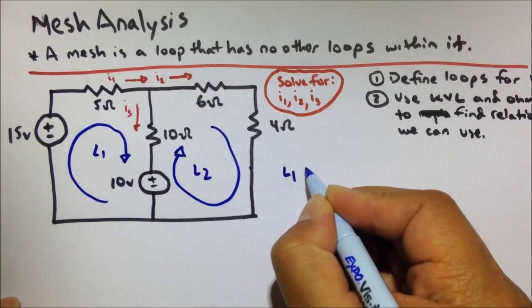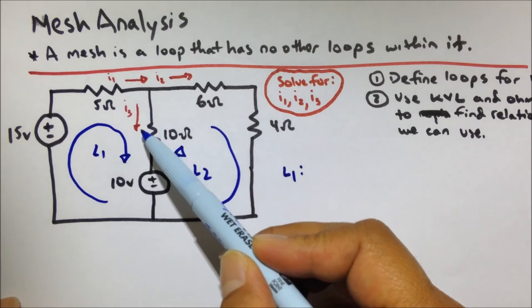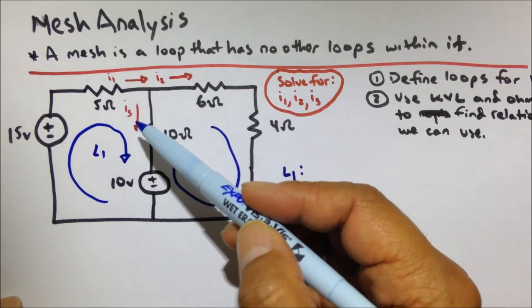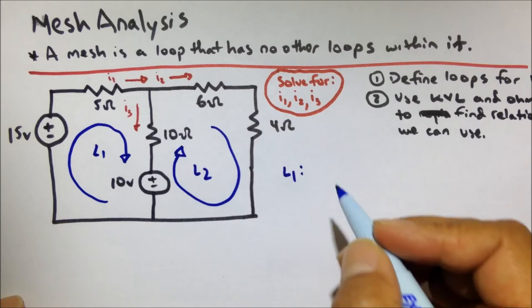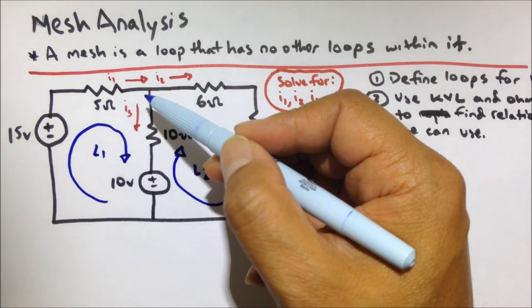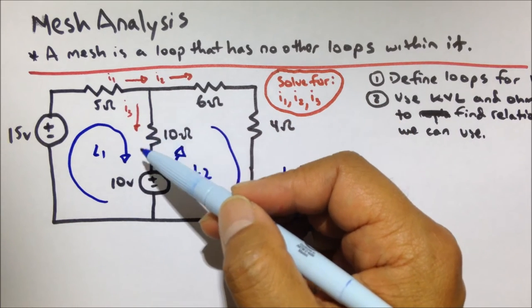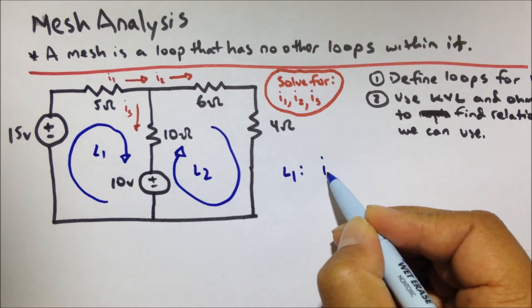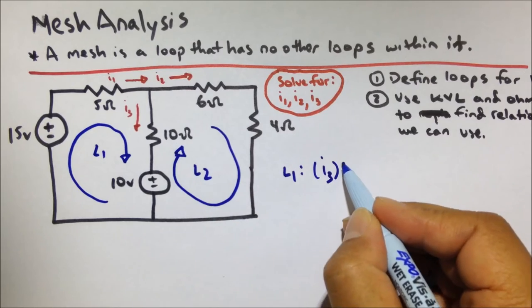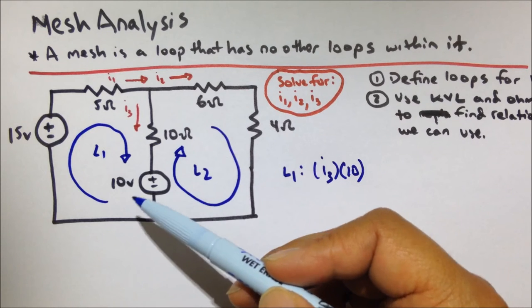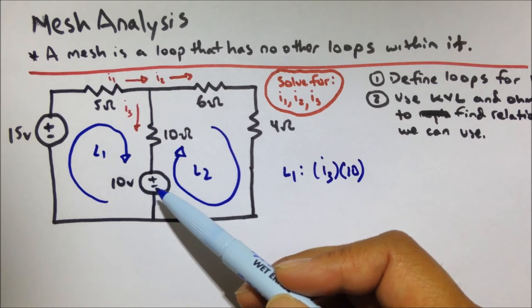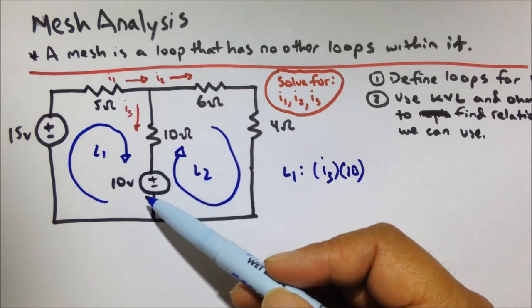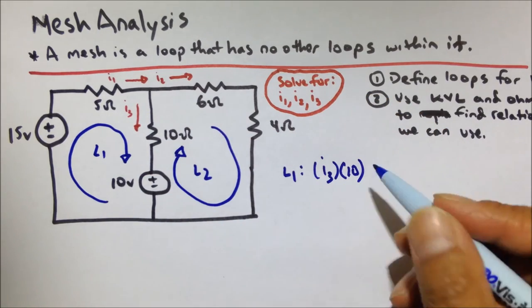Let's go ahead and write some equations using Kirchhoff's voltage law. If we take a look at loop 1, Kirchhoff's voltage law says that the sum of the voltages around the loop is equal to 0. So let's add up some voltages. If we go down this way, we have the voltage across this resistor, and using Ohm's law, that voltage is current times resistance — so I3 times 10. As we go down this way, we have a voltage source of 10 volts, with positive polarity over there and negative polarity over here, so potential difference is positive in that direction, and we add that here.